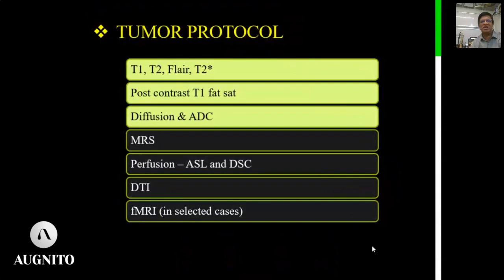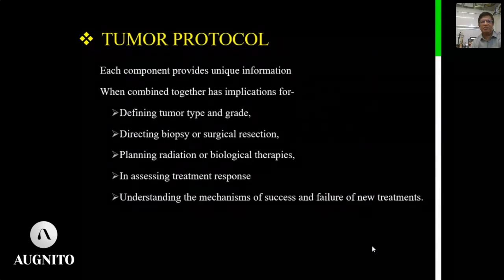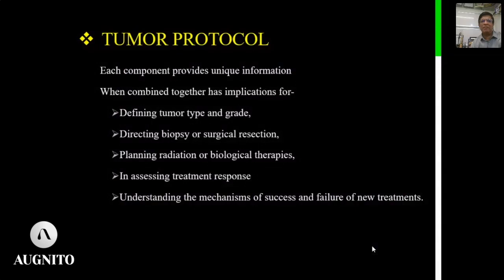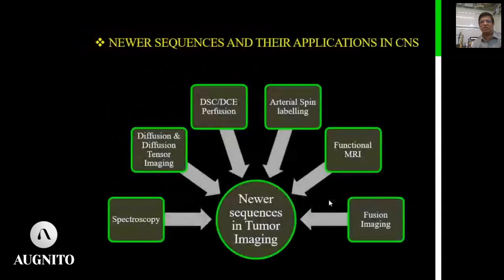The tumor protocol has changed completely from simple anatomical imaging to functional imaging. Each of these new sequences provides unique information which, when combined, has implications for defining tumor type and grade better, directing biopsy or surgical resection, and planning radiation and biological therapies more accurately. It also assesses treatment response much earlier and better, and allows researchers to understand the mechanism of success and failure of newer treatments — typically anti-angiogenesis therapy.